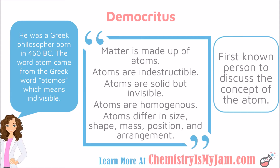The very first person to even mention the concept of the atom was a Greek philosopher named Democritus, born in 460 BC. He did not use any type of experiment — he was a philosopher trying to understand the world around him. He said matter is made up of atoms, atoms are indestructible, and atoms differ in size, shape, mass, position, and arrangement. He understood that atoms existed and didn't change over time, and that atoms of one element were different from others, but he had no clue what the atom consisted of. He named the atom 'atomos,' from the Greek word meaning indivisible.